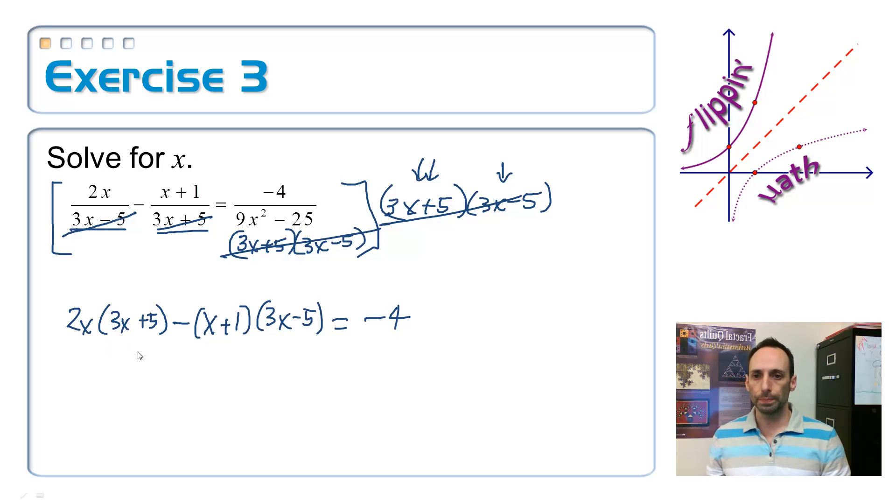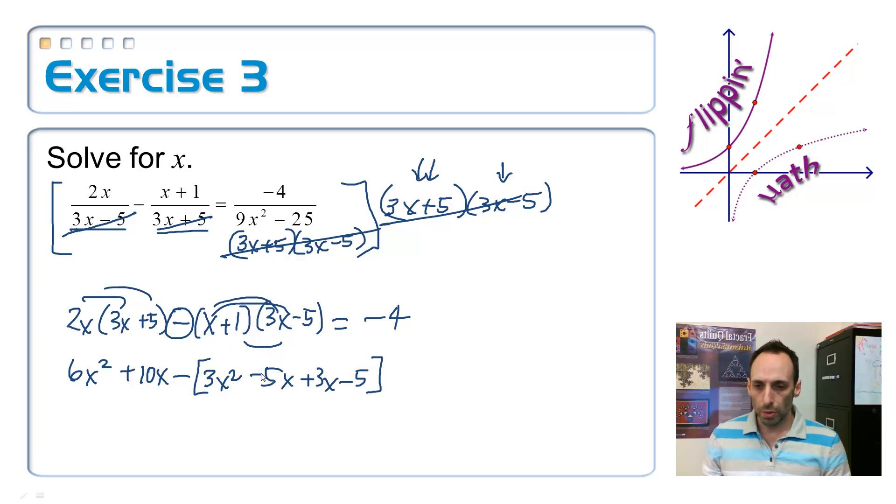I might have a quadratic equation right here, but that's no big deal. So distribute here, 6x squared plus 10x. I'm going to leave this minus sign for right now, distribute it in just a minute so I don't forget about it. So here I get 3x squared minus 5x plus 3x and then minus 5. So the middle term here just simplifies to negative 2x.